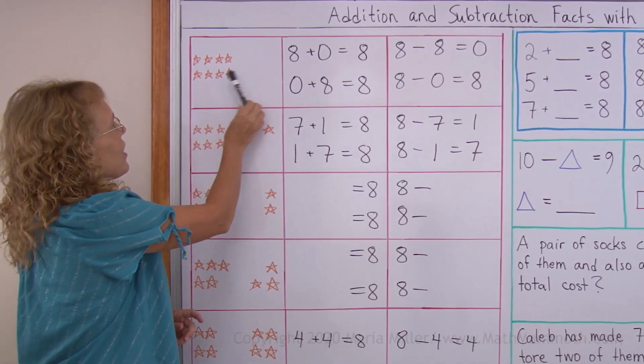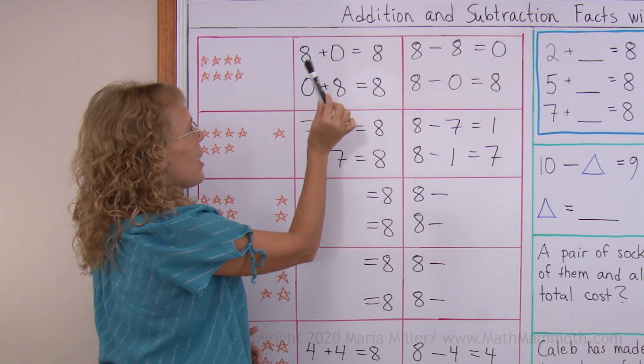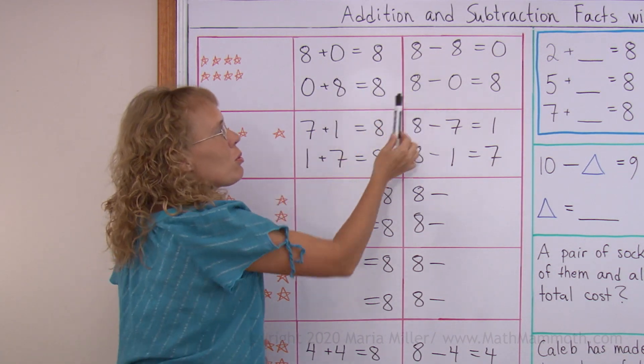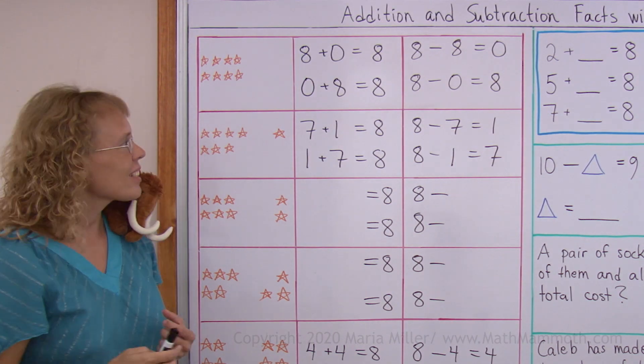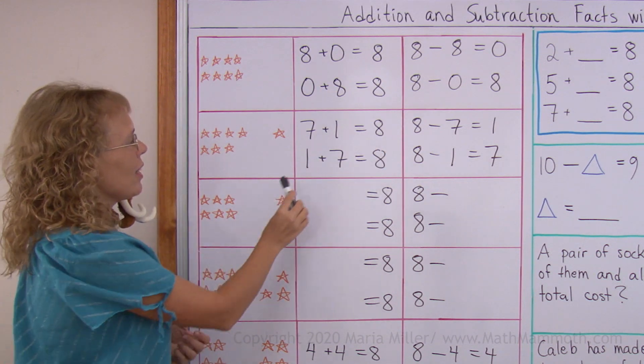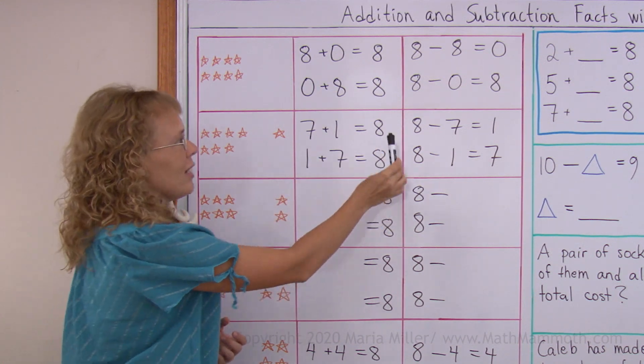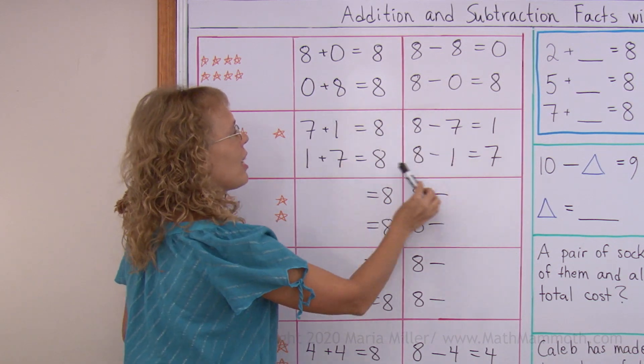And so for 8 and 0 we get this fact family here. 8 plus 0 equals 8, 0 plus 8 equals 8, and those two subtractions as you already are familiar with from our other lessons. And then 7 and 1: 7 plus 1 makes 8, 1 plus 7 makes 8, 8 minus 7 is 1, and 8 minus 1 is 7. That's a fact family there.